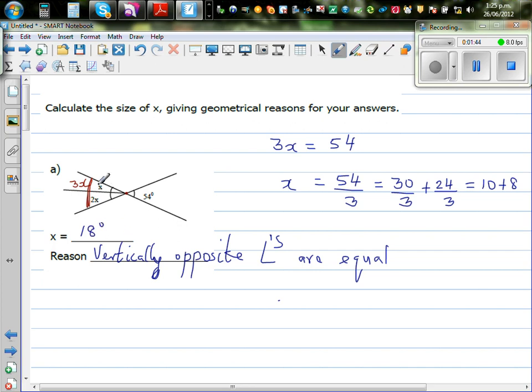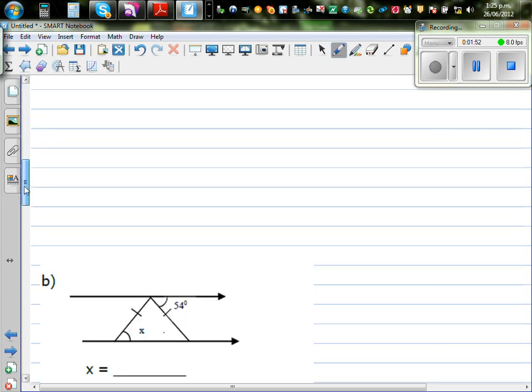It does make sense. So this is 18 degrees, and this is 36 degrees. So 18 and 36 makes 54. Let's look at this question.